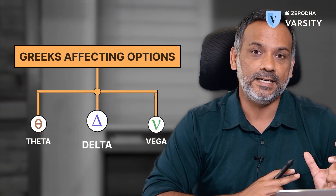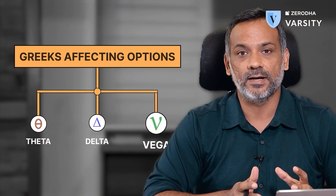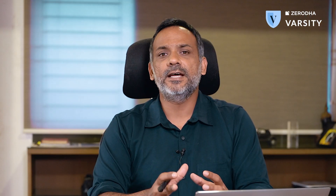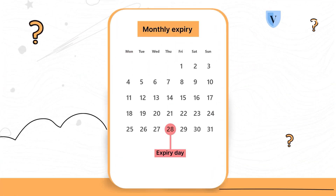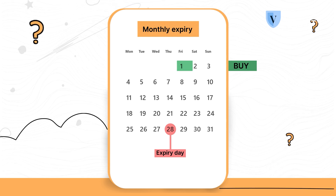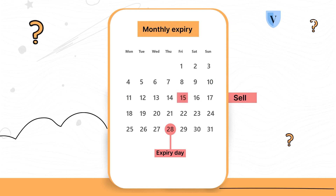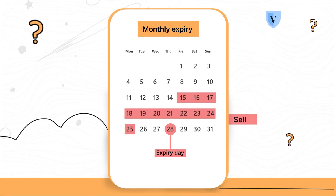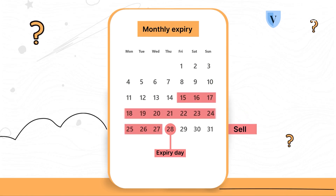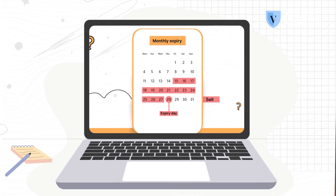So that's delta and vega. Next up is theta — probably the easiest Greek to understand. Theta is fairly straightforward. Generally speaking, with more time to expiry, it is okay to buy an option. And with less time to expiry, you are better off selling an option rather than buying one.